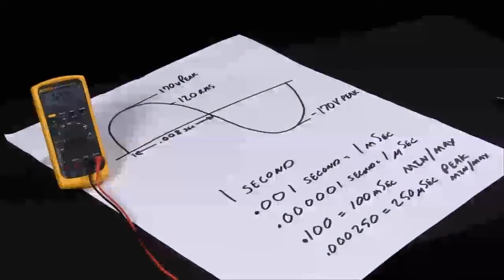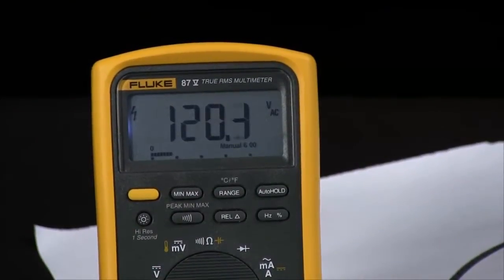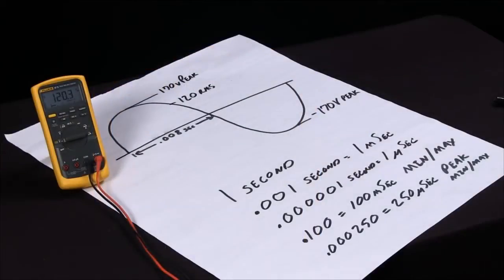What is peak min max on my Fluke 87 multimeter and how do I use it? The Fluke 87 has a unique capability called peak min max.